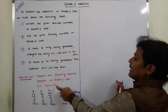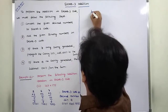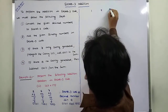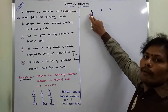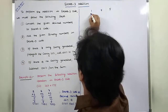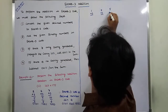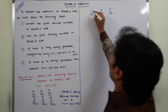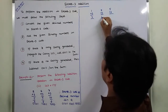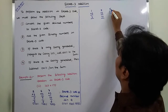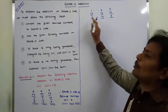Next, the second decimal number is 175, with digits 1, 7, and 5. To get the equivalent XS3 code, we have to add plus 3 to each and every digit: 1 plus 3 is 4, 7 plus 3 is 10, and 5 plus 3 is 8.